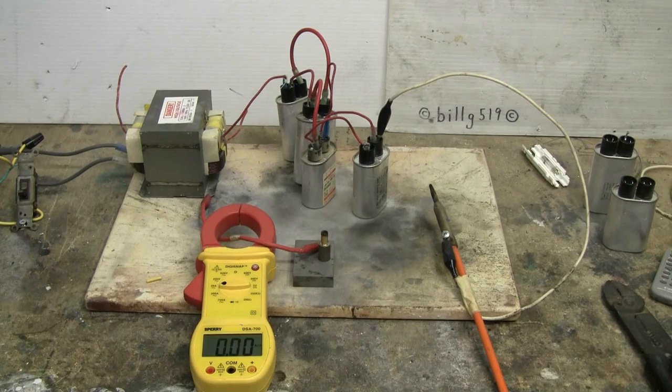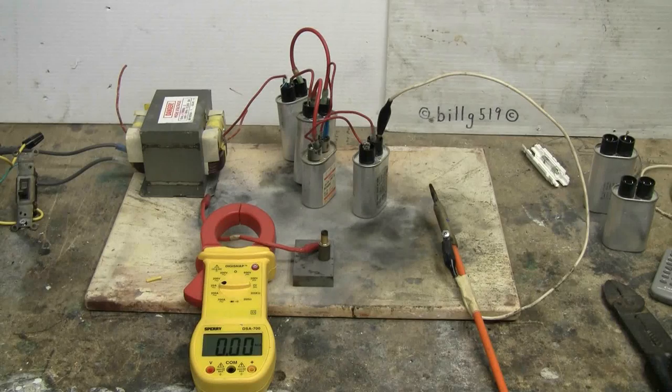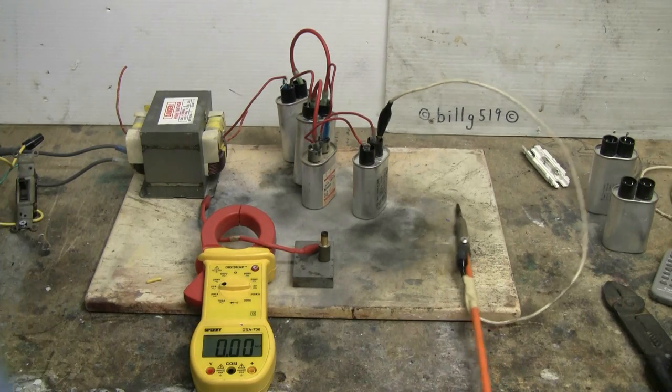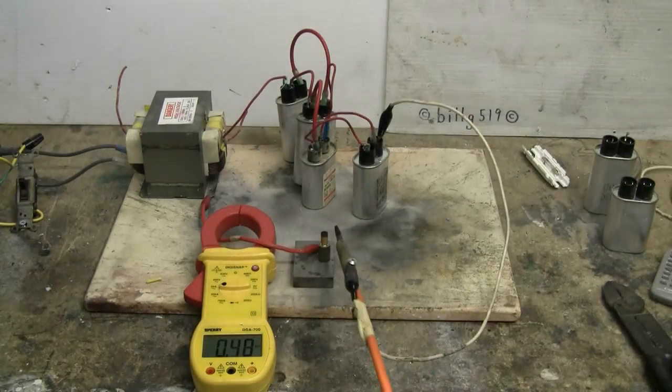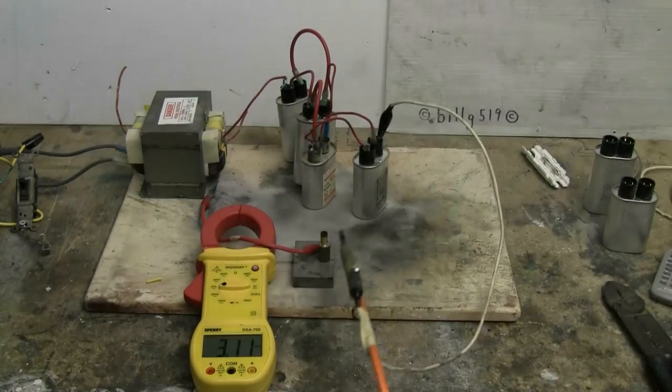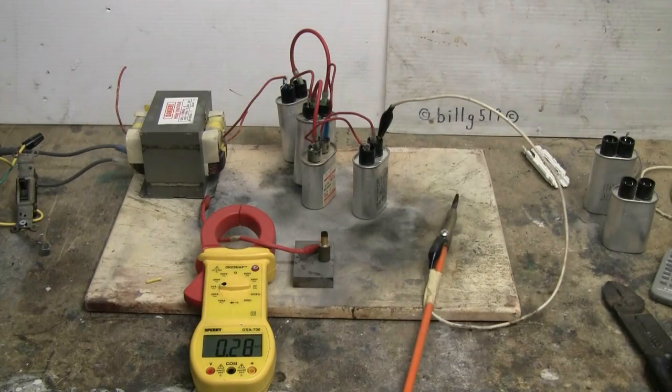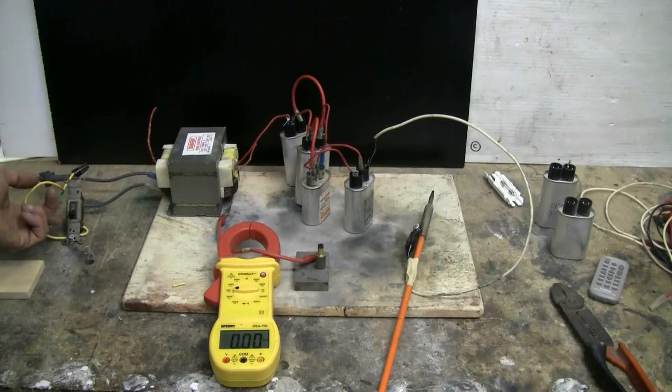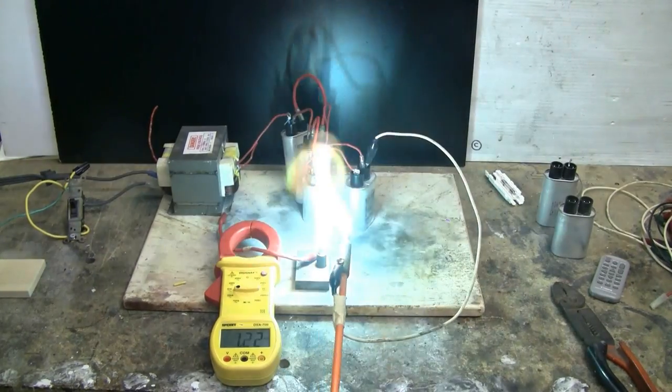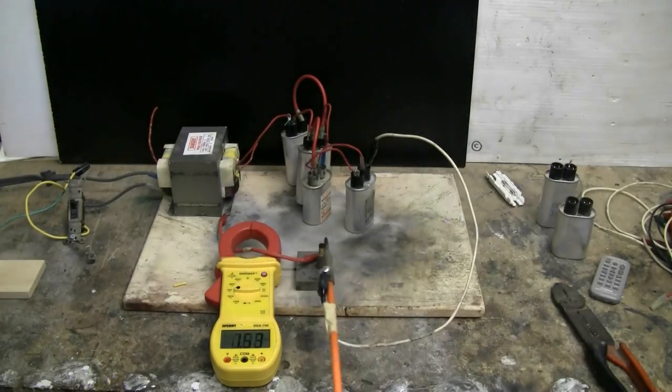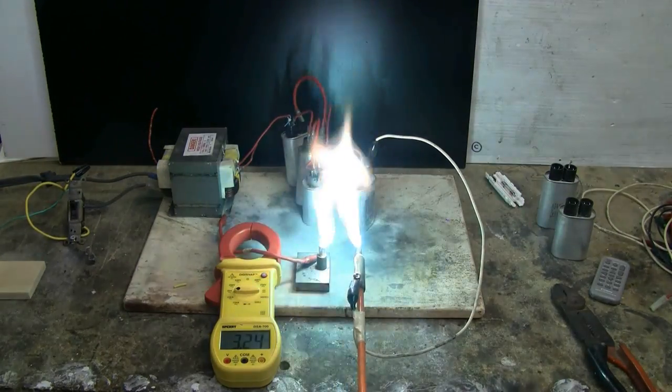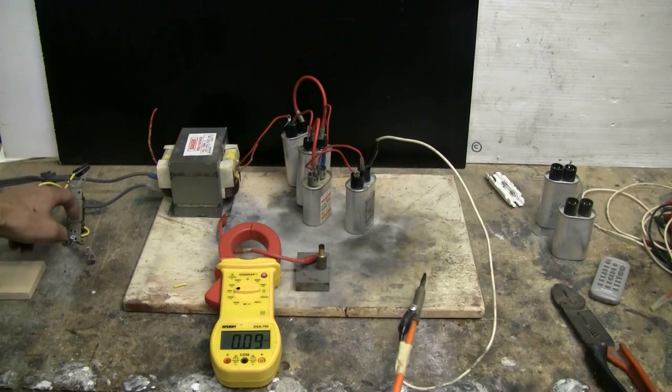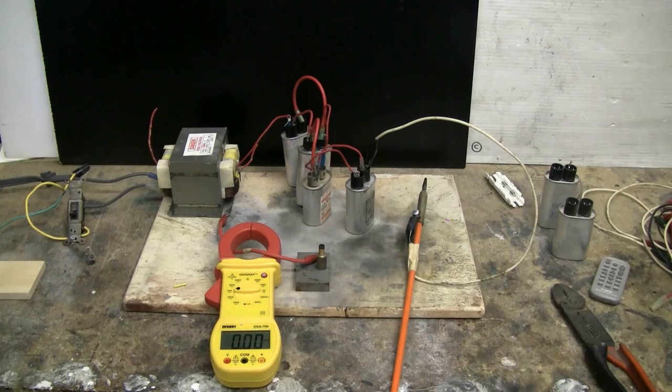I've now added a fourth capacitor to the circuit. They're of course being added in parallel each time. Let's see what the effect of capacitor number 4 is. And about 3.15 amps we're up to. Let's go again with the 4 capacitors. And we were seeing up to about 3.3 amps with that setup.